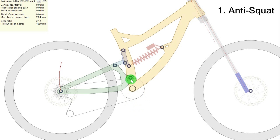So since the main pivot is on top of the chain ring, it means that it has great anti-squat characteristics. So good pedaling characteristics.